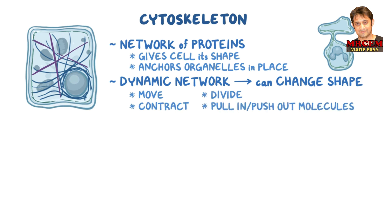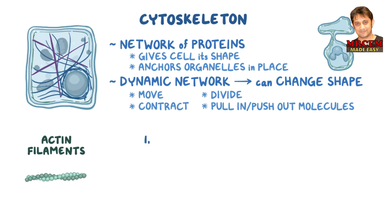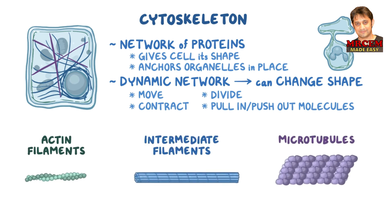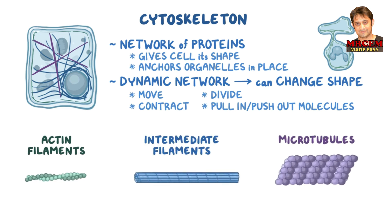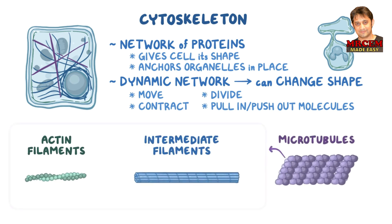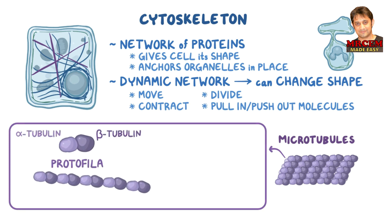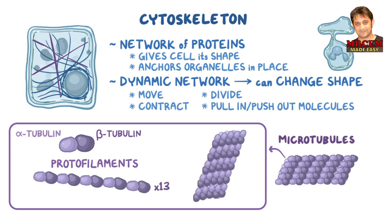It's made up of three proteins: actin filaments, intermediate filaments, and microtubules. Microtubules are made of alternating rounds of proteins called alpha and beta tubulins, which form long strands called protofilaments. Thirteen of these protofilaments come together to form a single microtubule.